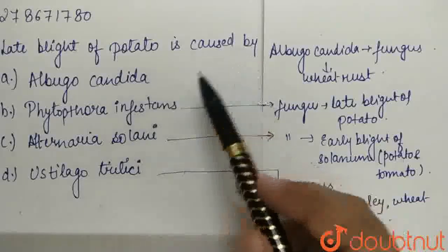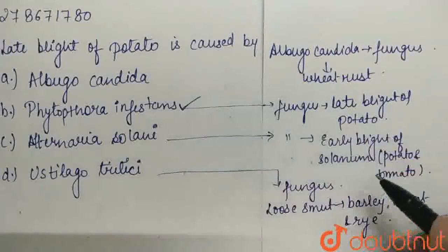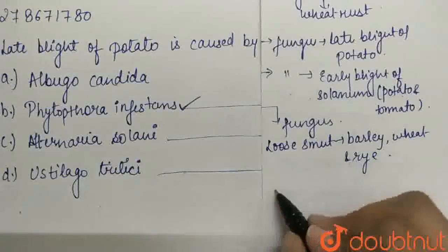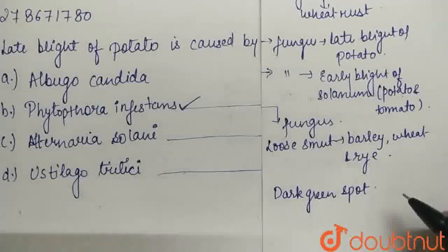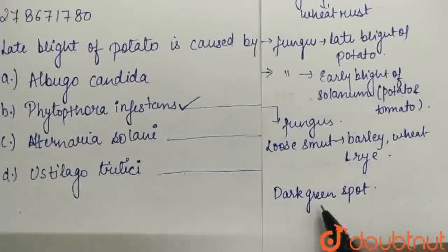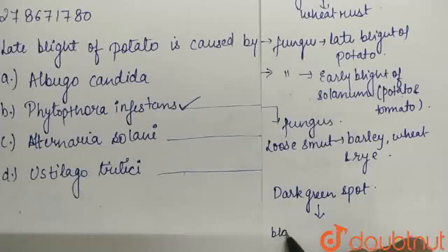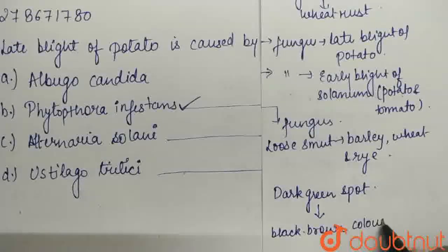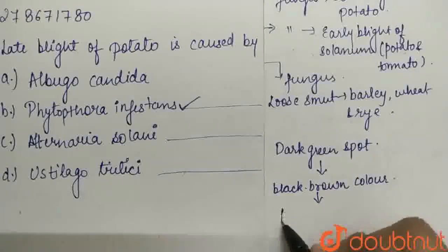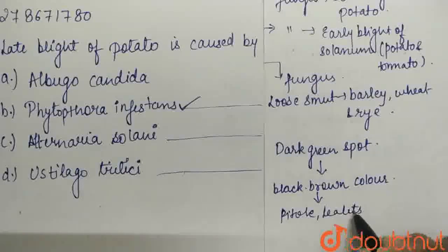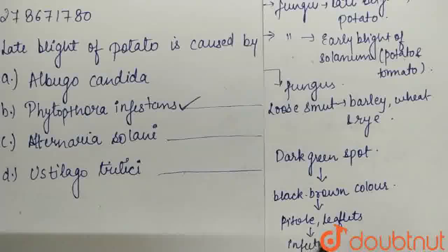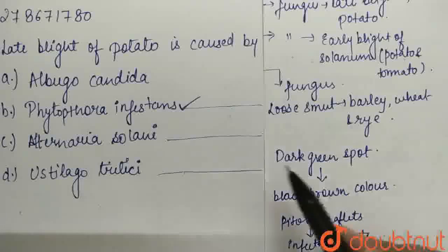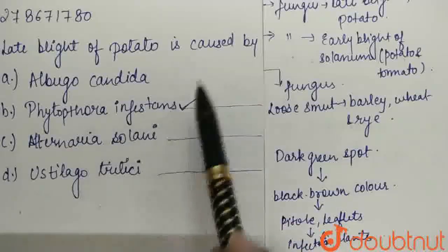So what is the answer? Late blight of potato is caused by Phytophthora Infestans. What happens in late blight of potato is that dark green colored spots appear which then change into black-brown color and then spread out. Late blight is caused by Phytophthora Infestans.